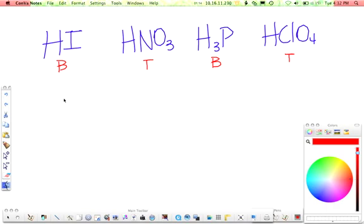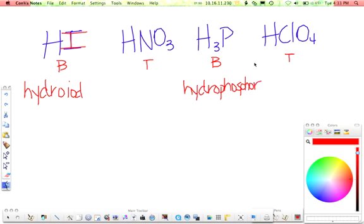When you're naming your binary acids, the first thing you always write down is hydro. All of the binaries have the prefix hydro. Then you write the root word for your anion. I is iodine, so I'm going to put iodine. For P, this is phosphorous, so I'm going to put phosphor. Remember, phosphorous is that weird exception where the root is actually just phosph, but they add on this extra little syllable just for pronunciation reasons.